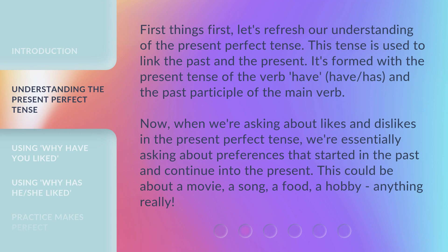First things first, let's refresh our understanding of the present perfect tense. This tense is used to link the past and the present. It's formed with the present tense of the verb — have or has — and the past participle of the main verb. When we're asking about likes and dislikes in the present perfect tense, we're essentially asking about preferences that started in the past and continue into the present.